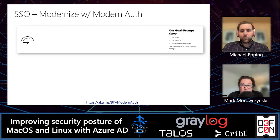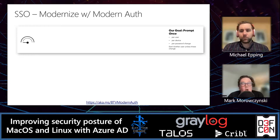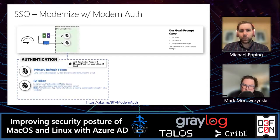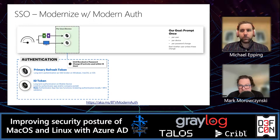From a modern authentication perspective — we covered this in depth at last year's DEF CON Blue Team Village talk (aka.ms/btvmodernauth) covering SAML, OAuth, OpenID Connect flows. The goal is to prompt users once per device, really per password change, unless something changes. We do this with a few token types. The Primary Refresh Token (PRT) acts as a token broker on Windows, macOS, iOS, or Android. It's good for a rolling 14-day window — as long as the user uses their device at least once every 14 days, the token gets refreshed.